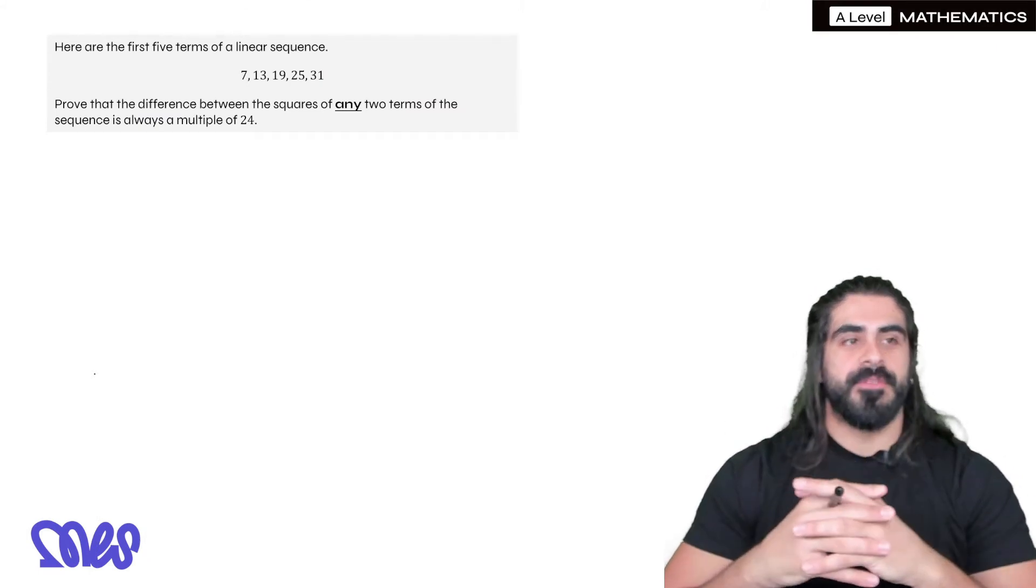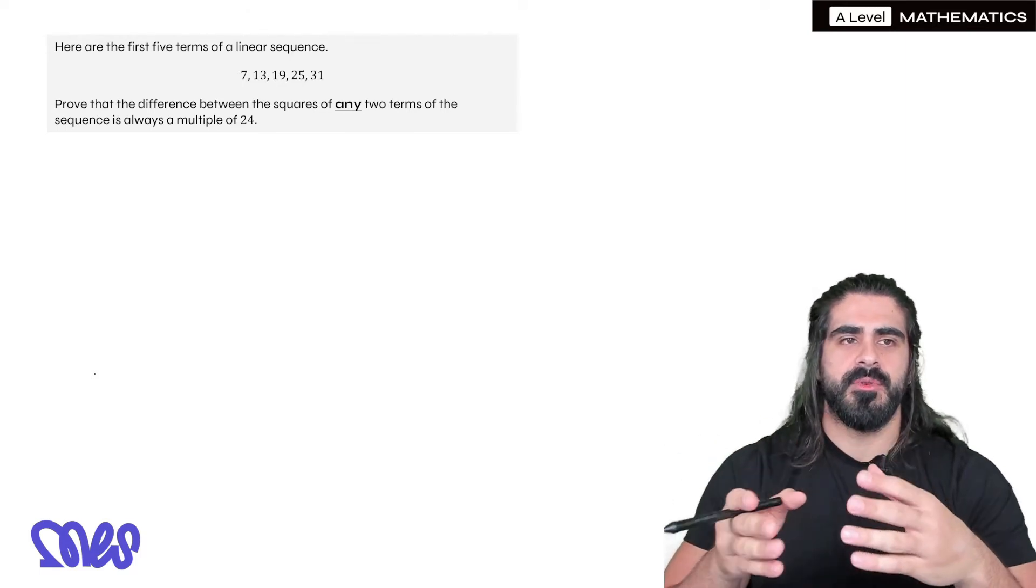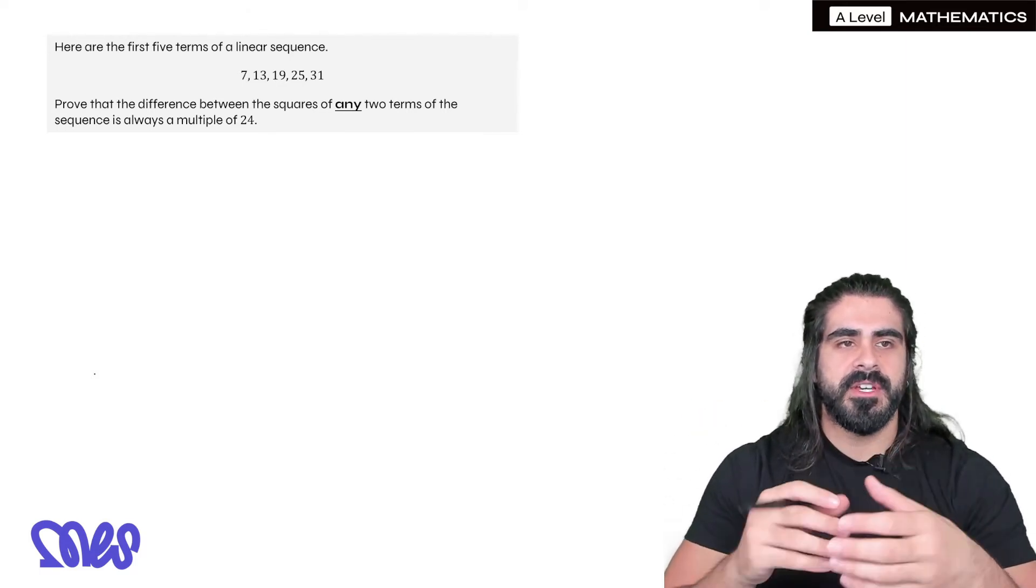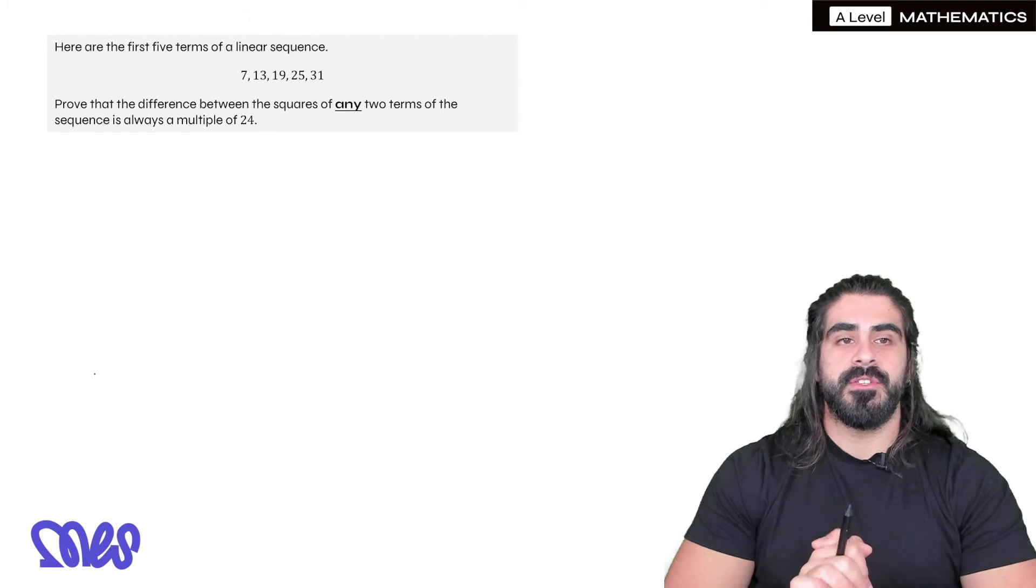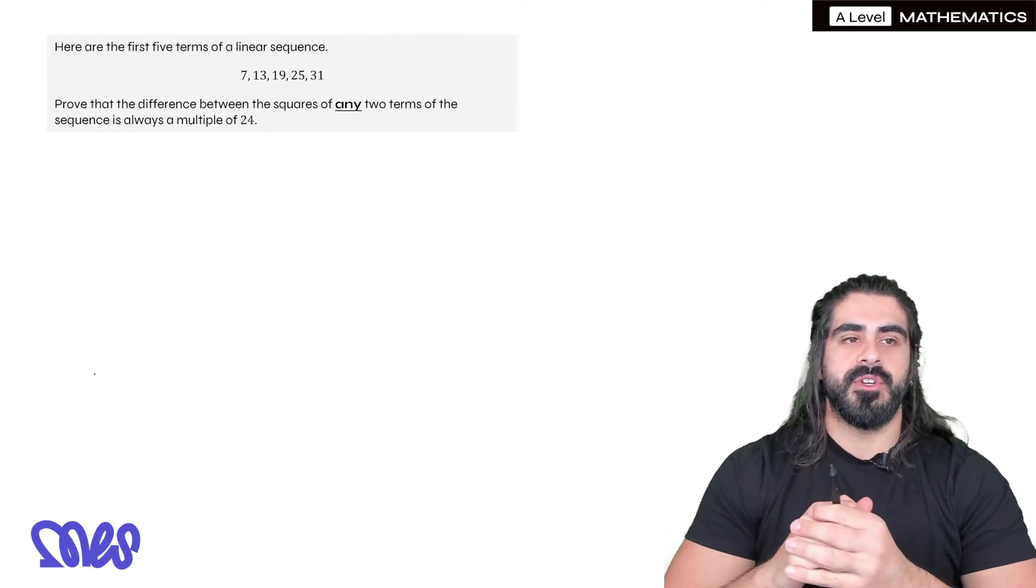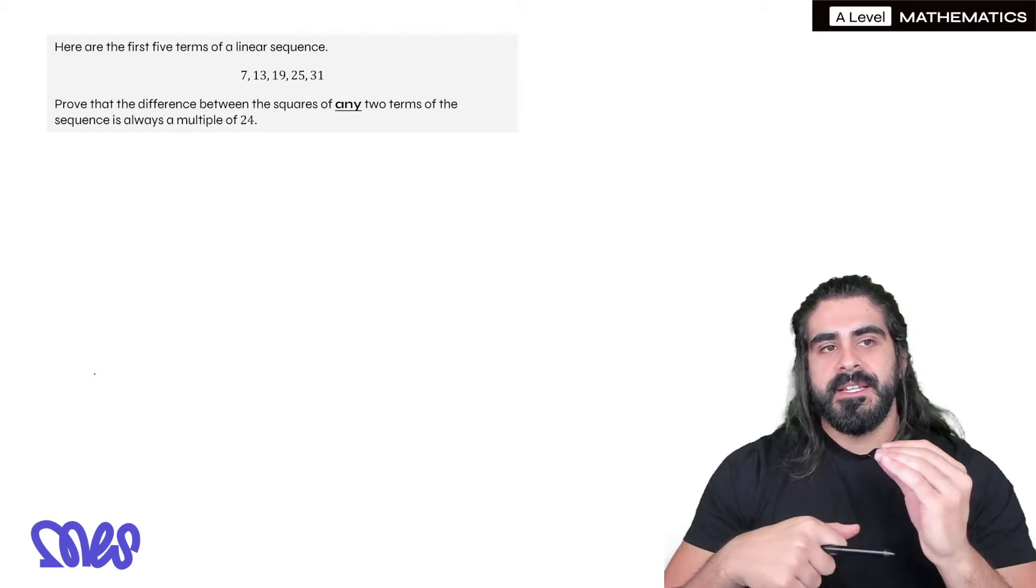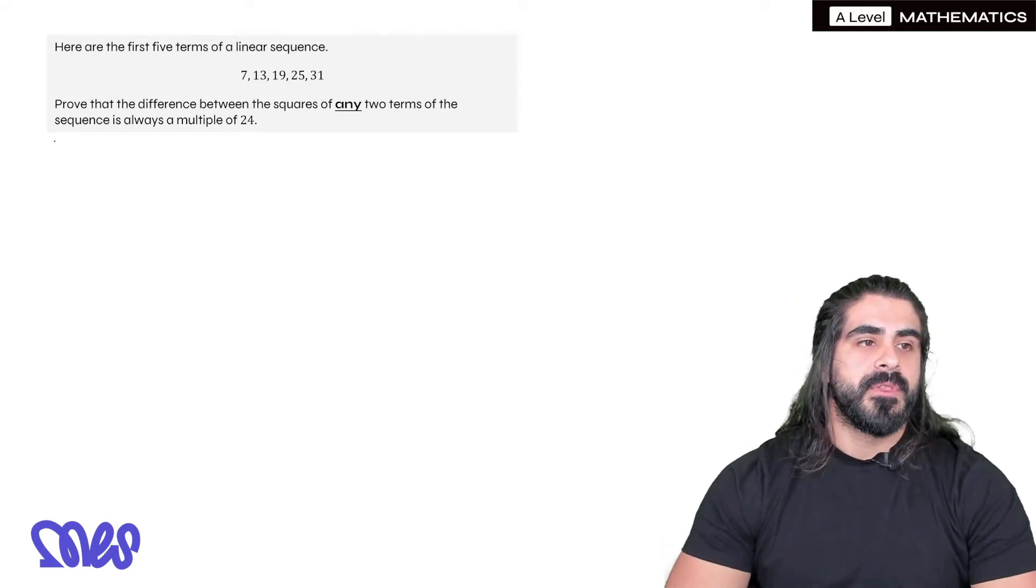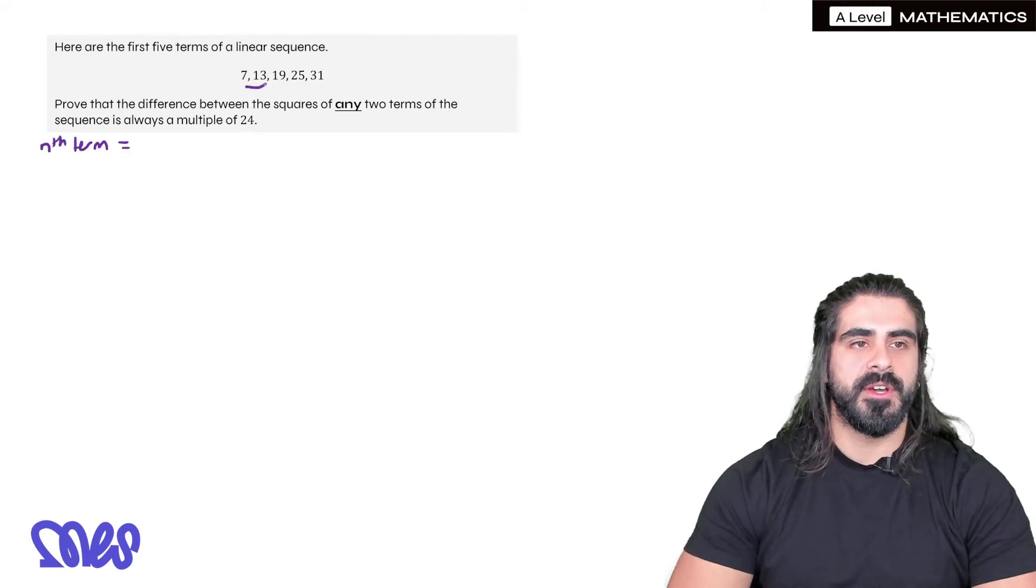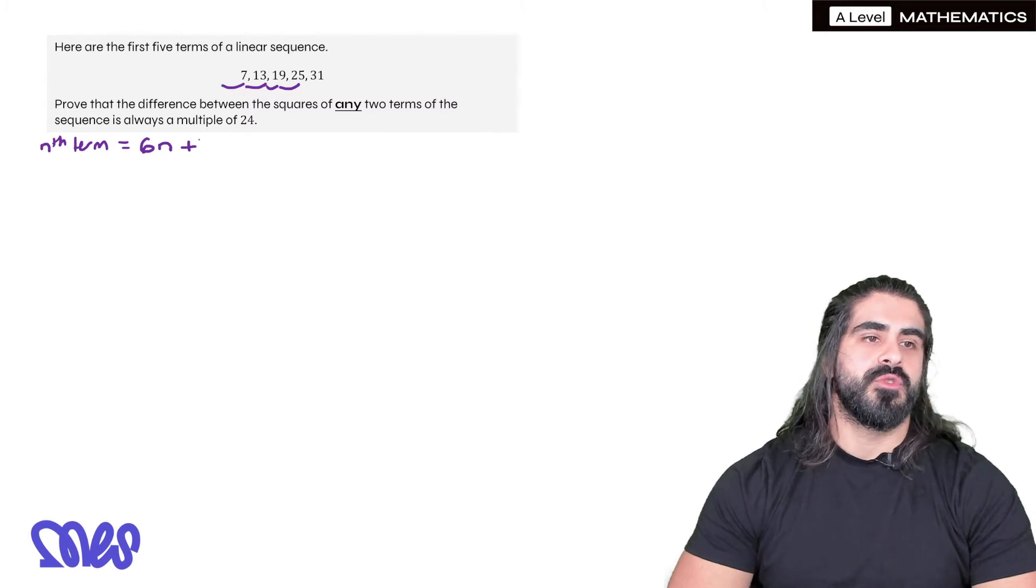Okay, here's an interesting question. Here are the first five terms of a linear sequence. So remember from GCSE, linear sequence just means a sequence whose terms go up by the same amount. 7, 13, 19, 25 and 31. Prove that the difference between the squares of any two terms of the sequence is always a multiple of 24. Alright, so step one is we need to write down the formula for this linear sequence, yeah, because we're using deduction to do this. So what is the nth term here? Well, what's it going up? It's going up in sixes. So it'd be 6n plus, then we can find the first term by subtracting 6, which would be plus 1.